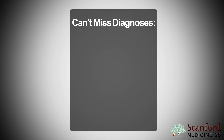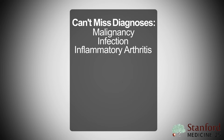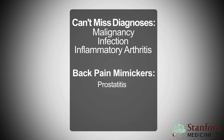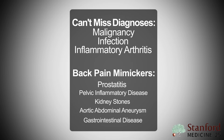Finally, while by far and away issues with the vertebra or muscles are the major causes of low back pain, be sure to look for these can't-miss diagnoses: malignancy; infections such as osteomyelitis or epidural abscess where patients may present with signs and symptoms of infection; inflammatory arthritis; and lastly, other areas that can mimic low back pain such as prostatitis, pelvic inflammatory disease, kidney stones, and aortic aneurysm or gastrointestinal disease.